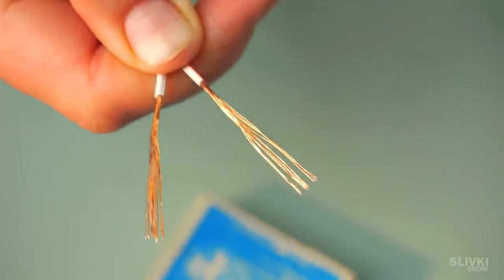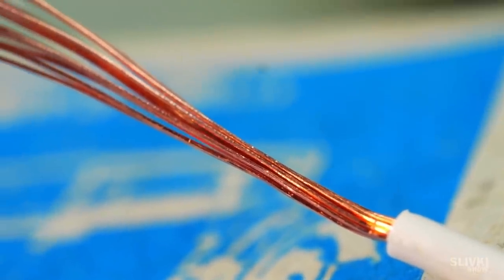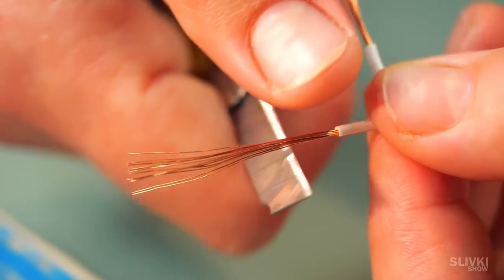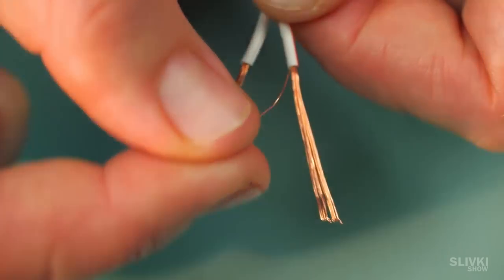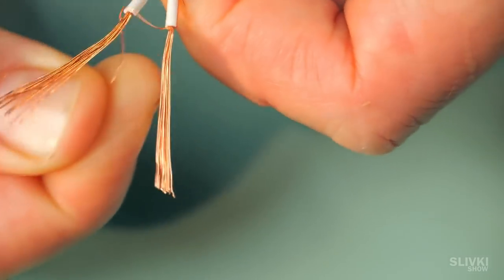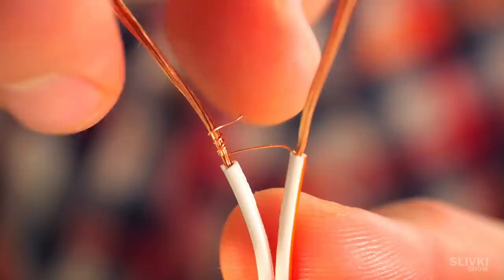Since each of these wires is covered with a thin layer of varnish, we need to clean them from it by using a knife the following way. Now separate one wire and wind it on the base of the opposite wire bundle to form a bridge about 5mm long.